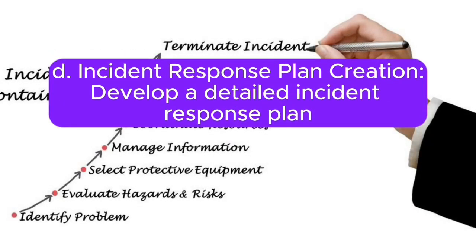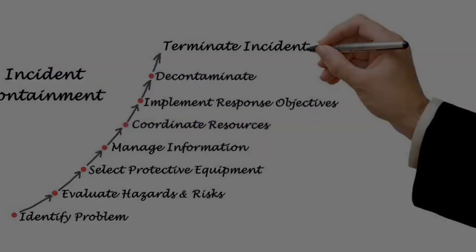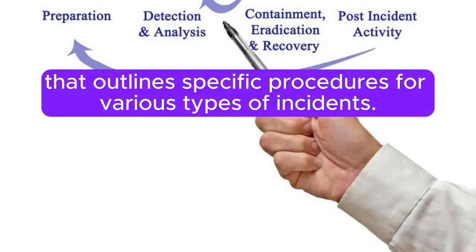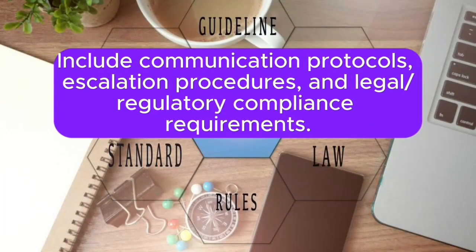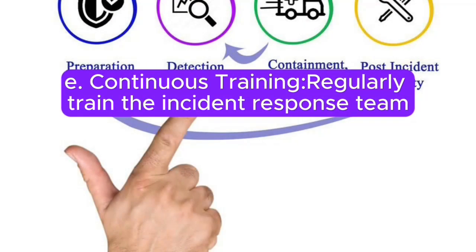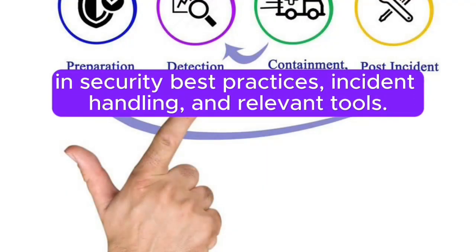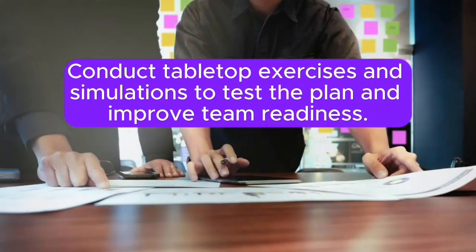D. Incident response plan creation: Develop a detailed incident response plan that outlines specific procedures for various types of incidents. Include communication protocols, escalation procedures, and legal or regulatory compliance requirements. E. Continuous training: Regularly train the incident response team in security best practices, incident handling, and relevant tools. Conduct tabletop exercises and simulations to test the plan and improve team readiness.